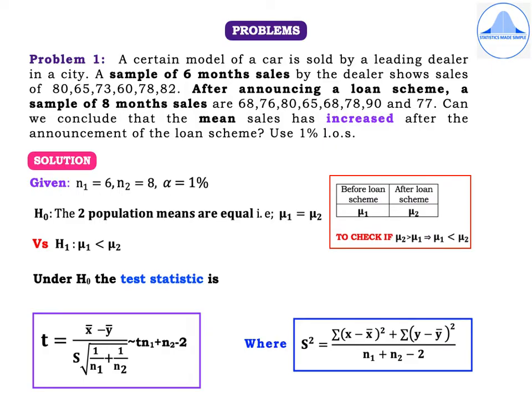Problem 1. A certain model of a car is sold by a leading dealer in a city. A sample of 6 months sales by the dealer shows sales of 80, 65, 73, 60, 78, 82. After announcing a loan scheme, a sample of 8 months sales are 68, 76, 80, 65, 68, 78, 90 and 77. Can we conclude that the mean sales has increased after the announcement of the loan scheme? Use 1% level of significance.